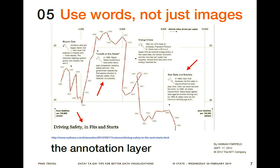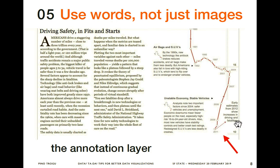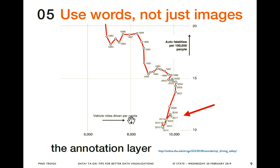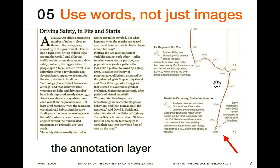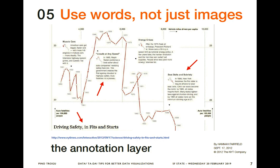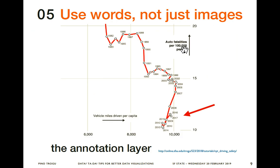Using words and not just images is very important. Amanda Cox at the New York Times — she's a graphics editor — calls this the annotation layer. In this example, a fancy scatter plot where data points are years appearing to go backwards, the topic is traffic deaths and how they've been going down, except recently there's been a slight increase — likely due to something we have in our pockets all the time. She calls it the annotation layer: you can have a fairly complex graph but fill it with beautiful captions explaining what happened in those years.